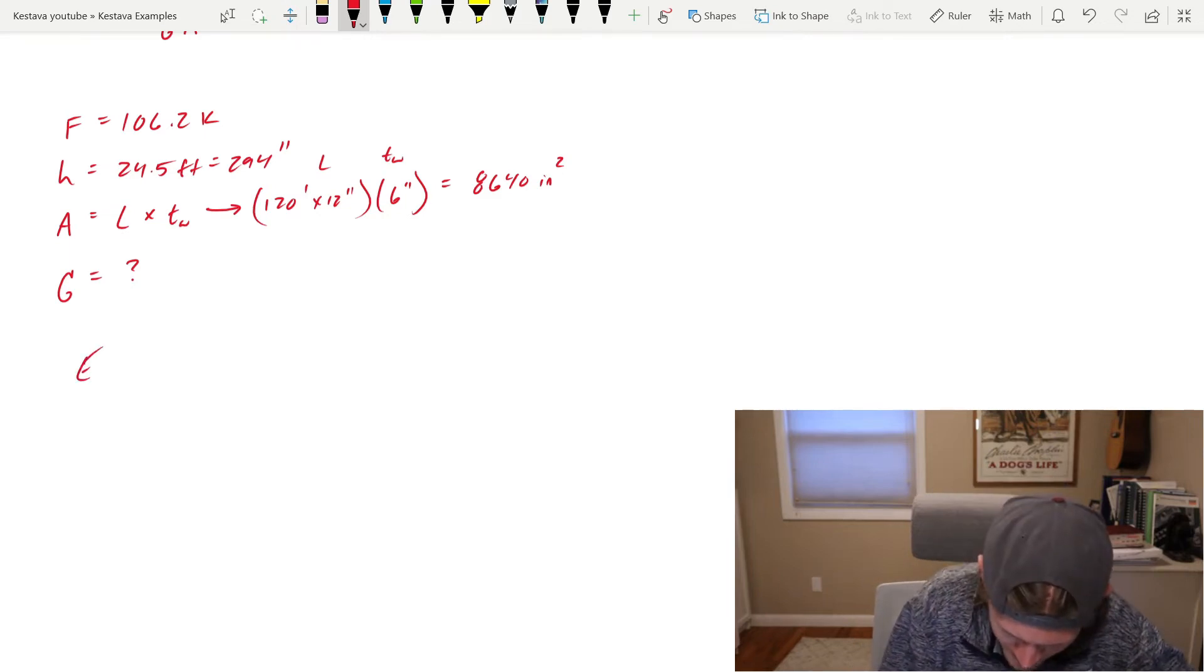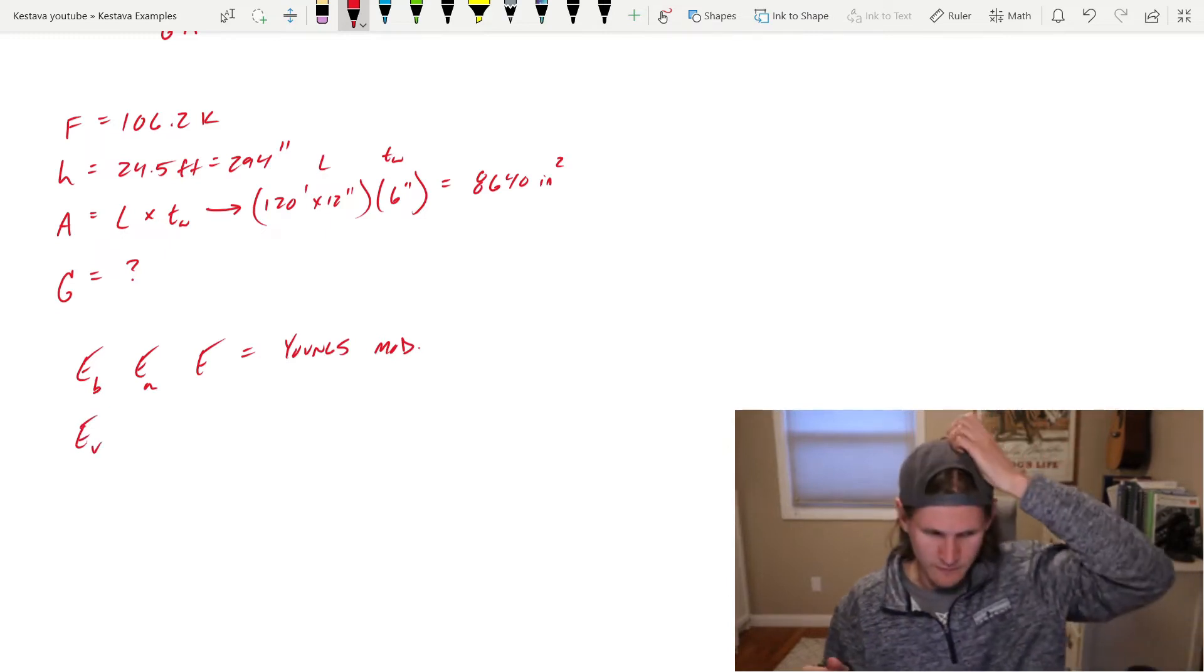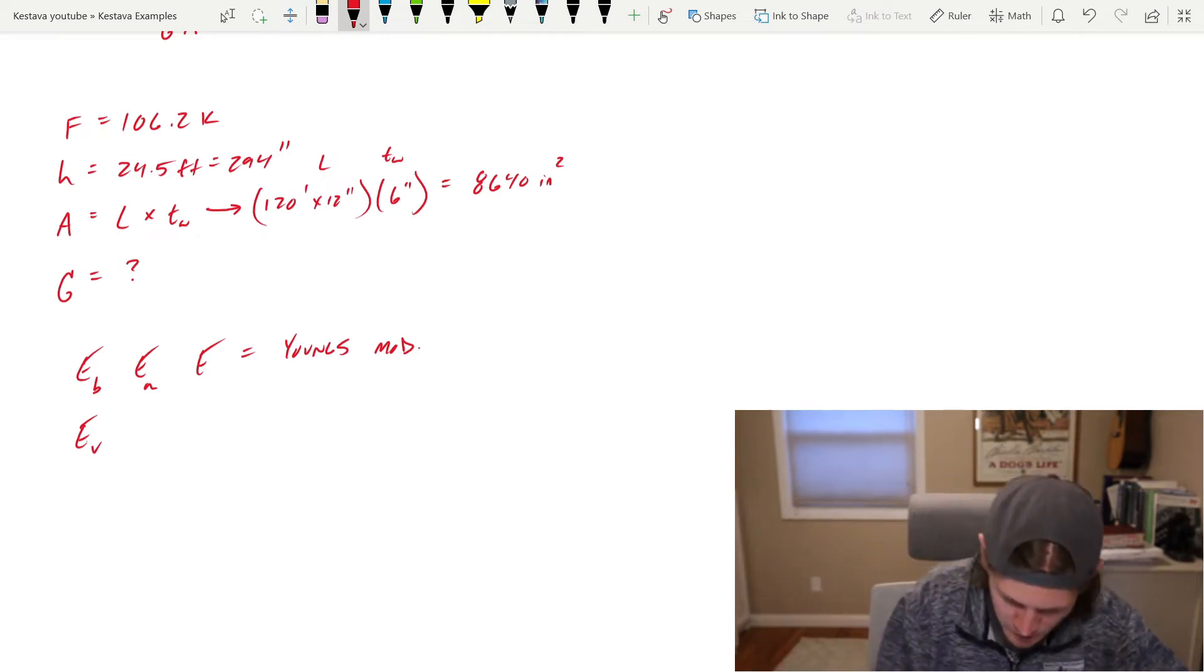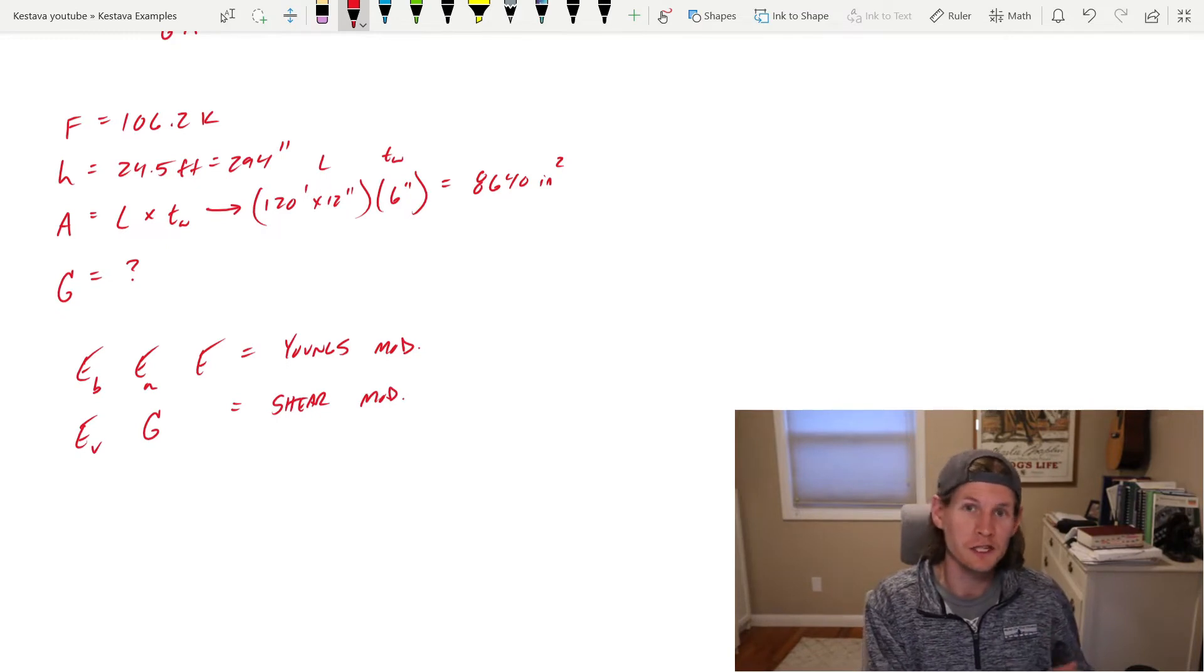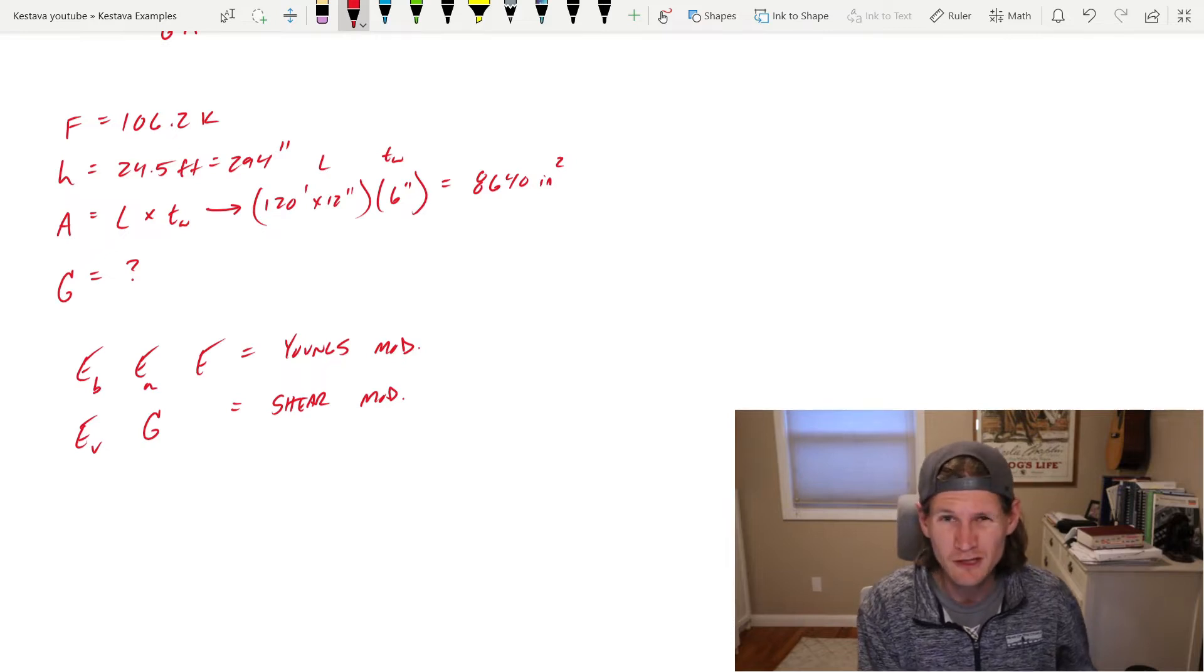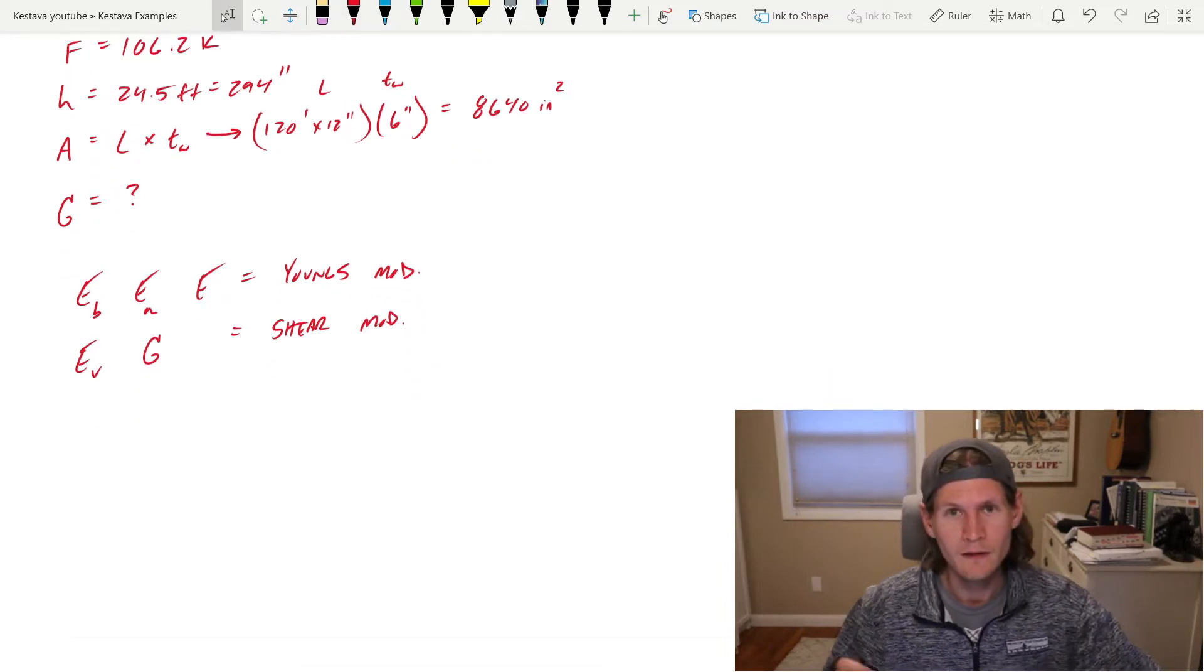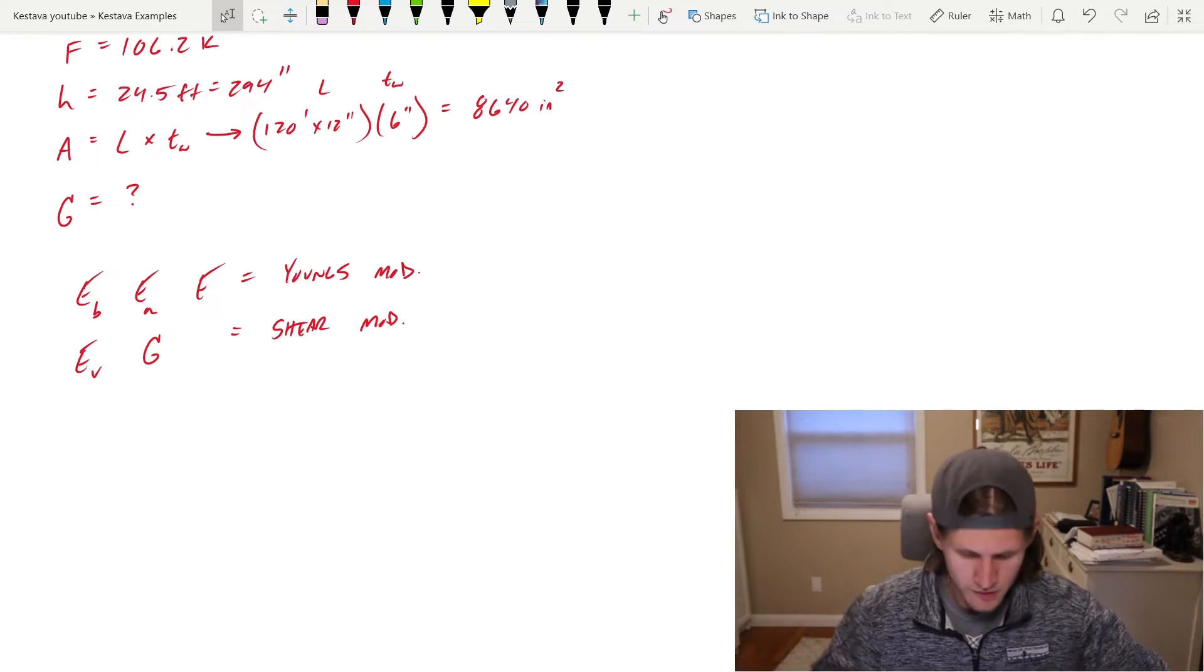Some people like seeing it as E_B for bending, or E_M for moment, or just E as your Young's. And I've also seen it as E_V for your shear modulus. But it's also very commonly shown as just G. The Young's modulus and your shear modulus, and actually there's another one called bulk modulus, those are the only three that I really paid attention to. They're interconnected with one another and they're related, so you can actually determine one from another one. And that's what we're going to do here.